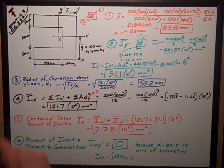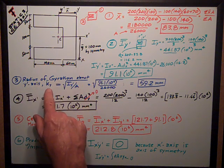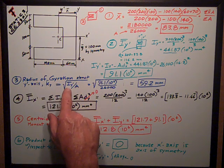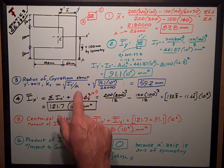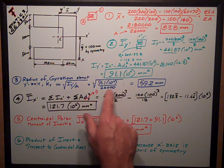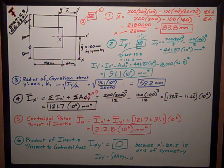Now, part 3 was the radius of gyration about the centroidal y-prime axis. We call that ky. That's the square root of the moment of inertia, iy-prime, divided by the area. That's 91.1, 10 to the 6th, divided by 26,000, the area. Take the square root of that, it's 59.2 millimeters.